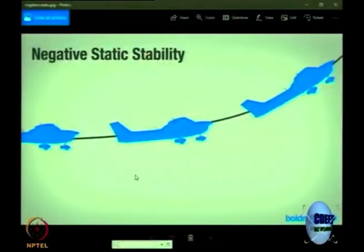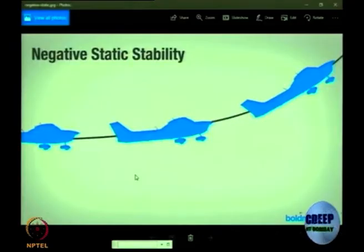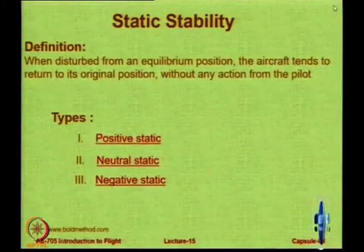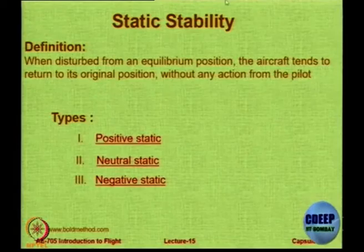The third type is negative static stability. In this case, if you disturb the aircraft, it goes to a position of disturbance and then on its own goes further away. We call it negatively static stability — but we still use the word 'stability' because we do not yet know the final outcome.